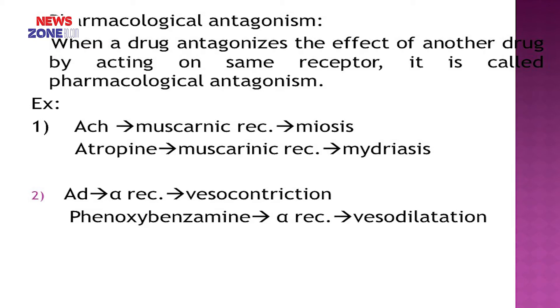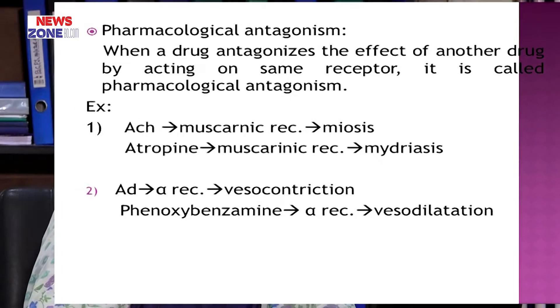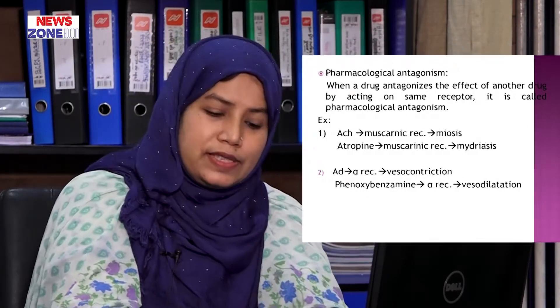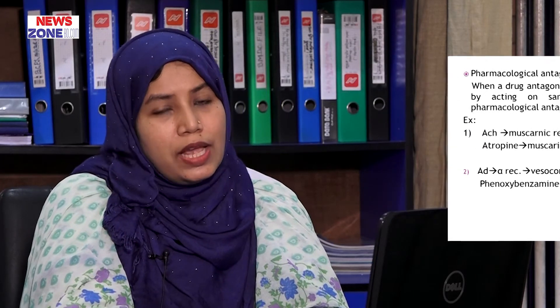Another example is adrenaline and phenoxybenzamine. Phenoxybenzamine is an irreversible alpha blocker. Adrenaline causes vasoconstriction by acting on alpha receptors, while phenoxybenzamine acting on the same alpha receptor causes vasodilation. They both antagonize the action of one another by acting on the same alpha receptor. So this is the key difference: physiological antagonism acts on different receptors, while pharmacological antagonism acts on the same receptor.